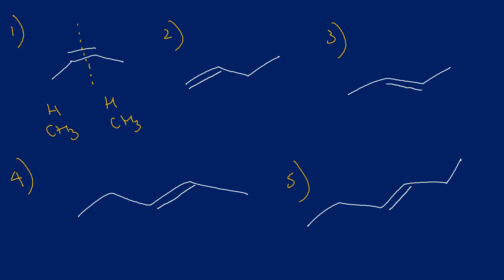Number two: I can already see there's a H here and a H here, but over here that's definitely not a H - that's an ethyl group. So already I can see that number two is asymmetric.